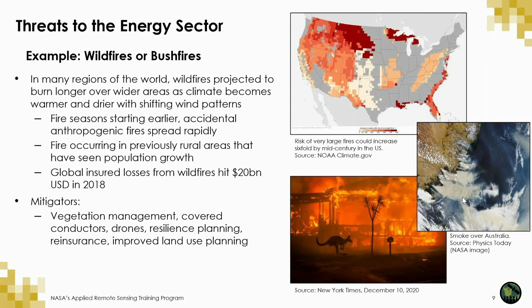First, wildfires or bushfires are one of the most common threats to energy production, transmission, and distribution. Wildfires are projected to burn longer and over wider areas in many regions of the world — we've already seen this particularly in the United States and Australia. Fire seasons are starting earlier, and fires can spread dangerously fast. There are important mitigators including managing vegetation and protecting infrastructure. Drones can be used to collect real-time data on risk. Earth observations can shed light on vegetation and land use.